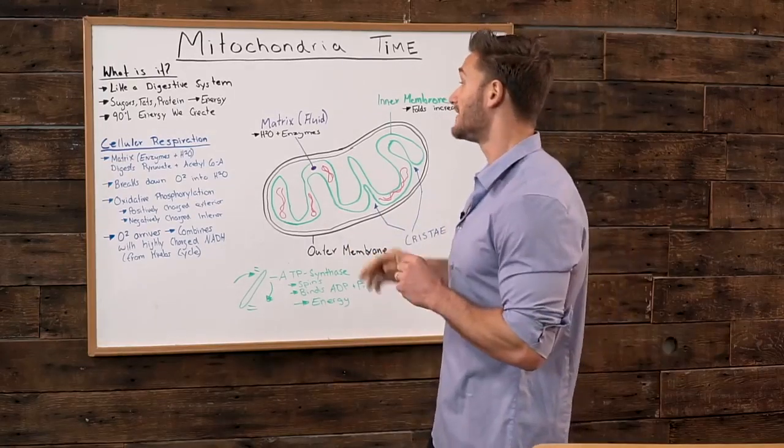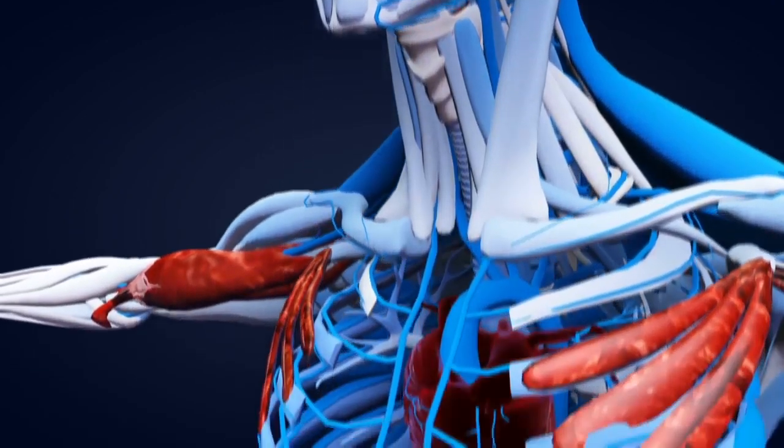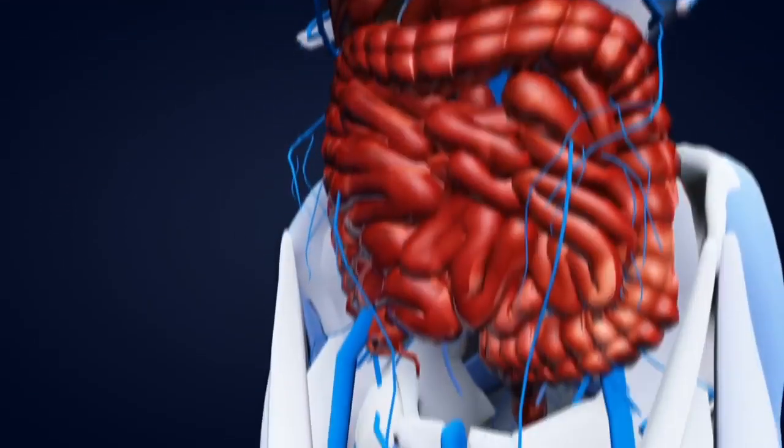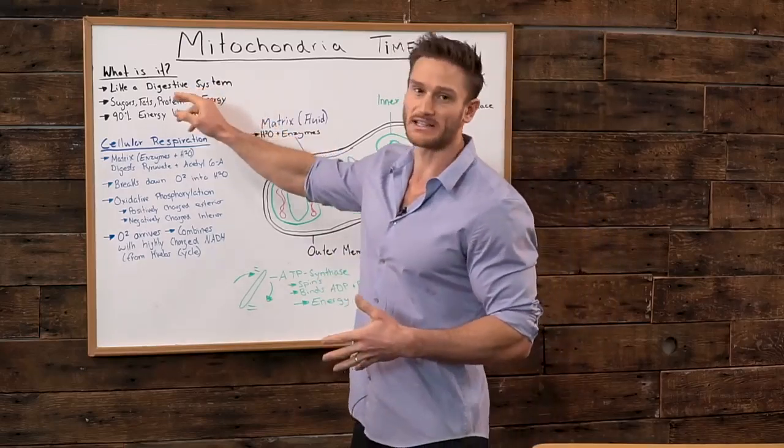First of all, it's important that you know 90% of the energy that we create is created in the mitochondria, whether it's in a brain cell, liver cell, whatever. They're everywhere producing so much energy. But it's like a digestive system. Think of it as your cell's digestive system.